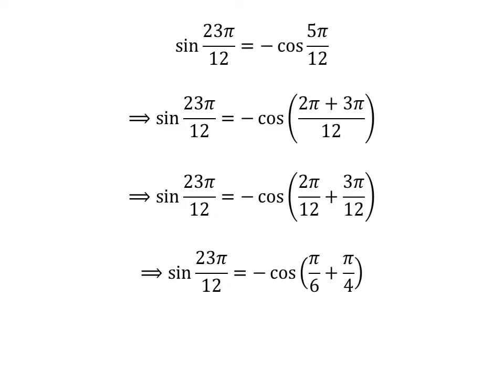Following the previous steps, we get sine of 23π/12 is equal to minus cosine of (π/6 + π/4).